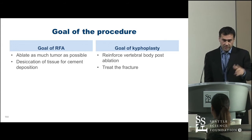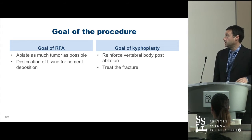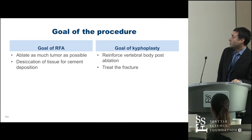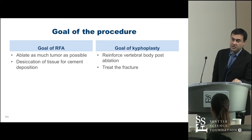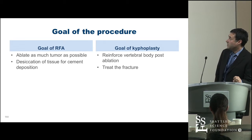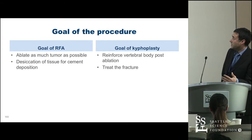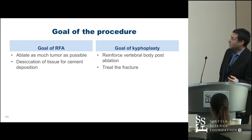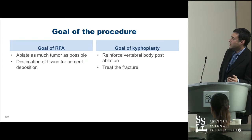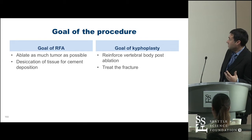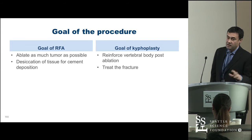So what is the goal of treatment? I don't think anybody will argue that we can sterilize this vertebral body. But we can ablate as much as possible — especially the posterior elements — to prevent posterior tumor extension and prevent nerve root compression. Desiccation of tissue really helps with cement deposition, and that's the RFA part.